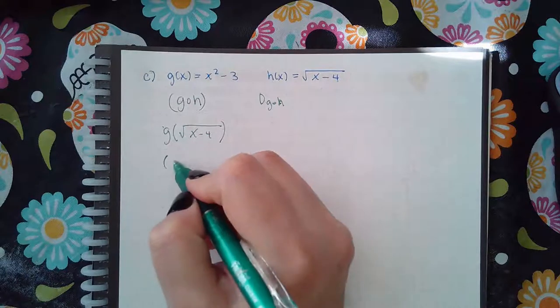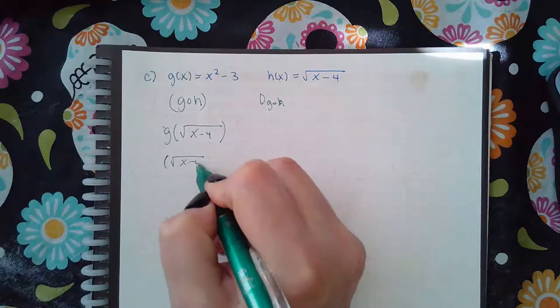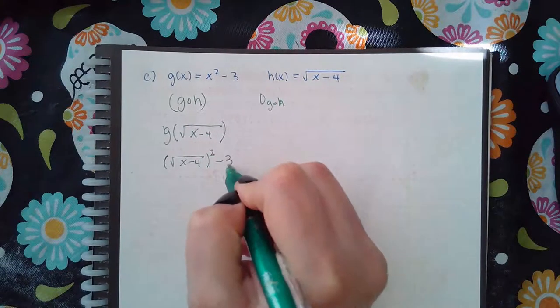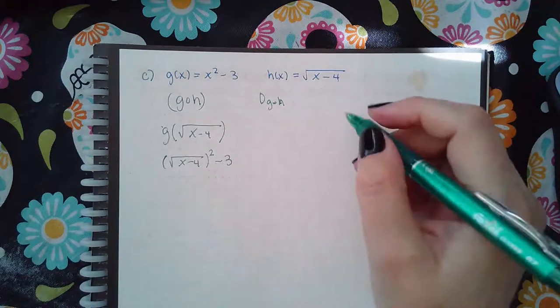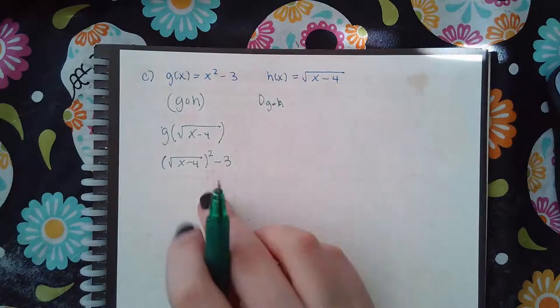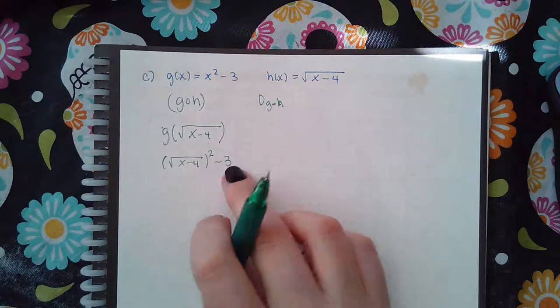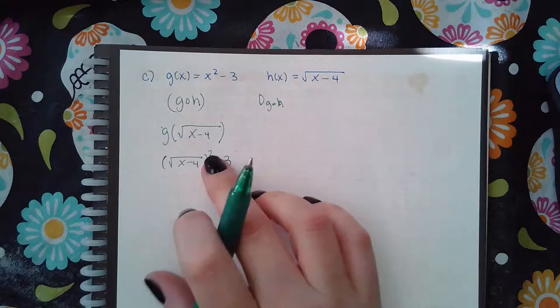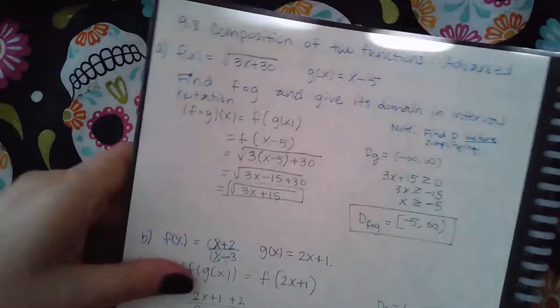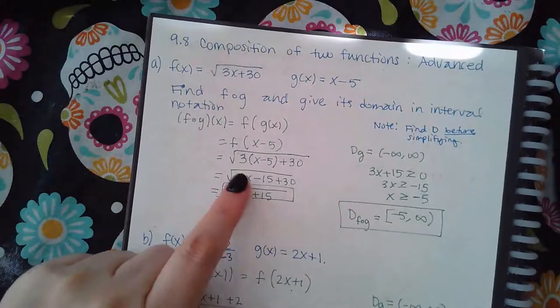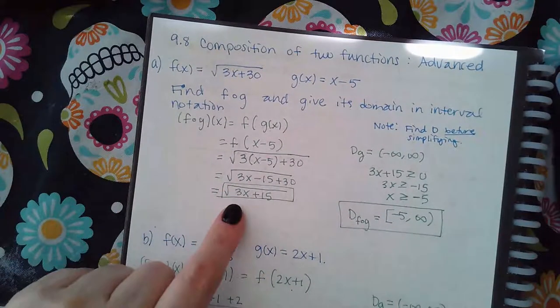...we're going to have the square root of x minus 4 squared minus 3, and then over here for the domain, this will simplify, but when you're doing the domain, you actually have to figure out the domain before you cancel this out. It's not like the other two problems where I didn't need to cancel anything. I was literally just distributing and combining like terms.